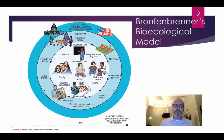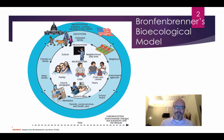Outside of that, we have the exosystem. That might be friends of the family or extended family — things that influence the mesosystem, like school boards, the media, neighbors, or government agencies.